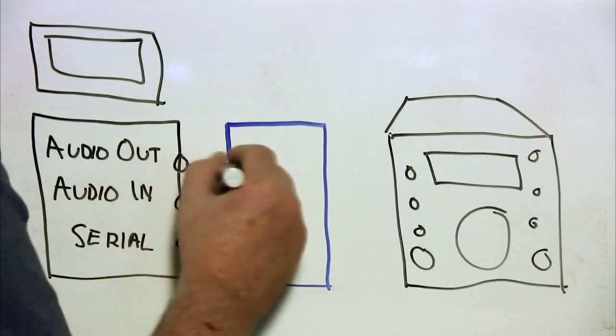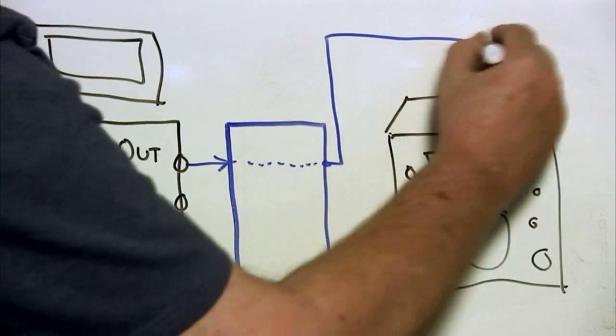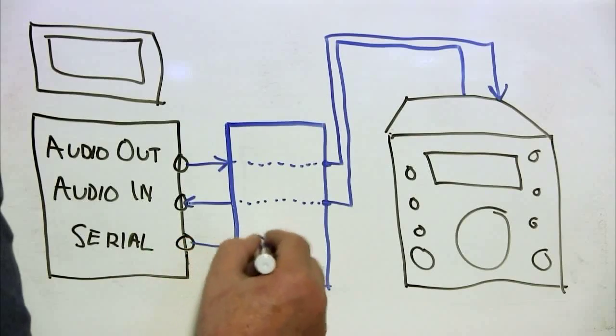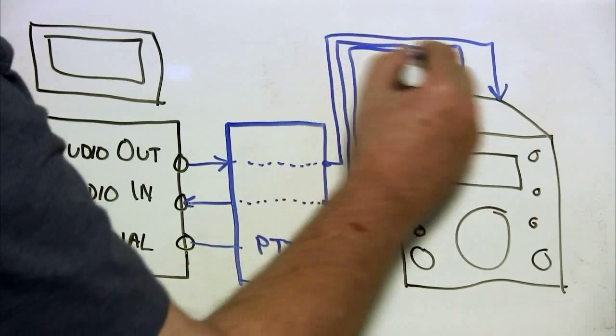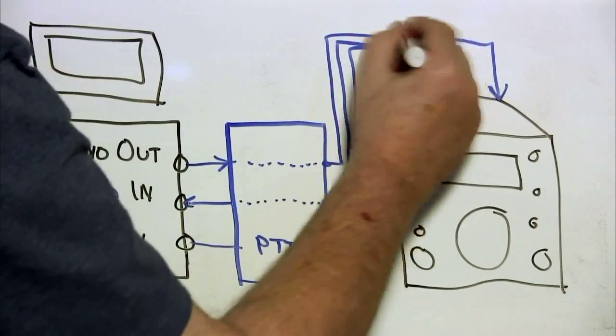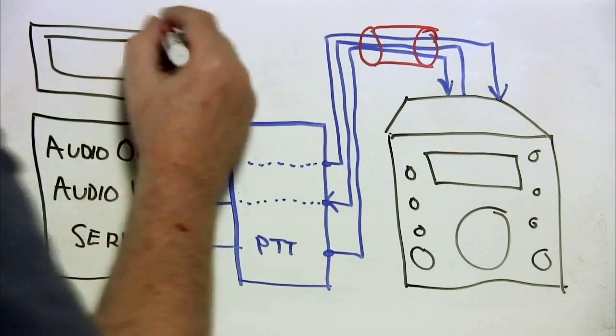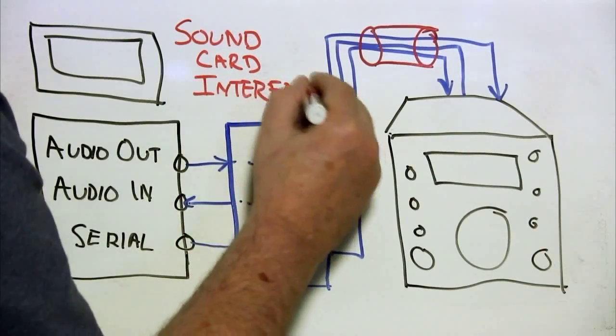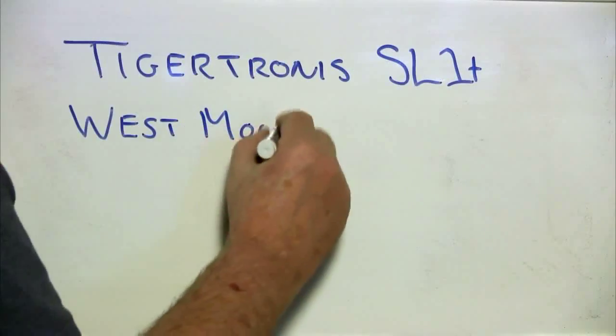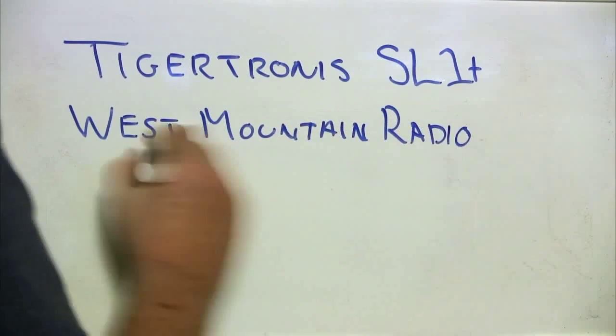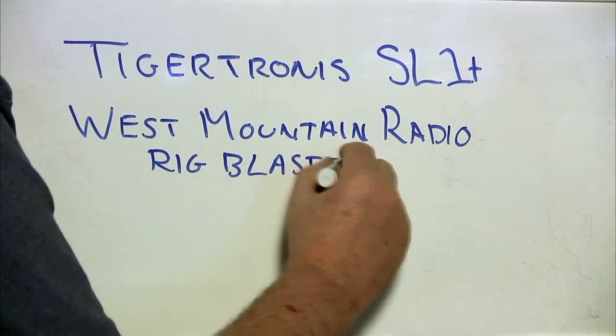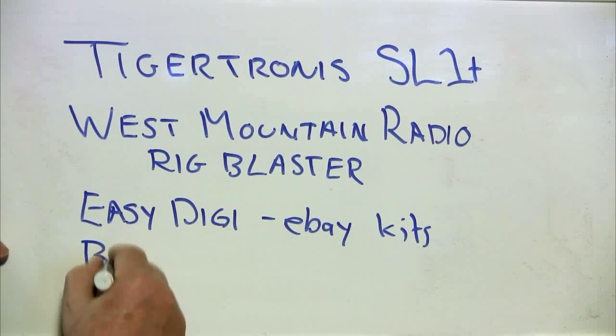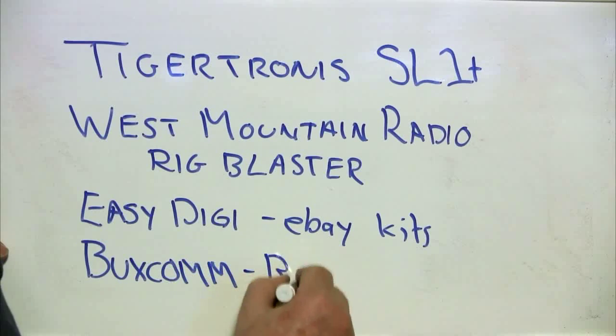So everything I've talked about, you can buy in what I'm going to call the traditional sound card interface. This is a box that goes between the audio ins and outs of the radio in the computer to a serial port on the computer to generate a push-to-talk for the radio. Many times, this interface box will connect to the rear connector on the radio, which means you have to order the correct cable with the box. So examples of these are from Tigertronics, their SL1+. West Mountain Radio has the Rig Blaster series. Easy Digi has assembled kits available on eBay. Buxcom with their RASCO interfaces. And there's many others out there.